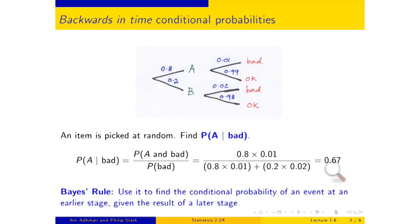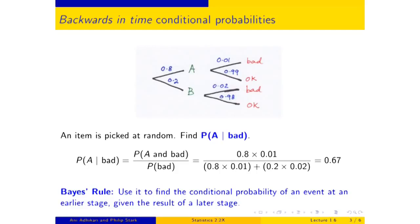This method is called Bayes' rule, due to the Reverend Thomas Bayes. It is used to find the conditional probability of an event at an earlier stage given the result at a later stage — it's probability going backwards in time. This method is used a lot; for example, spam detection software uses it to update its probabilities about what kinds of messages are spam based on what it's seeing.